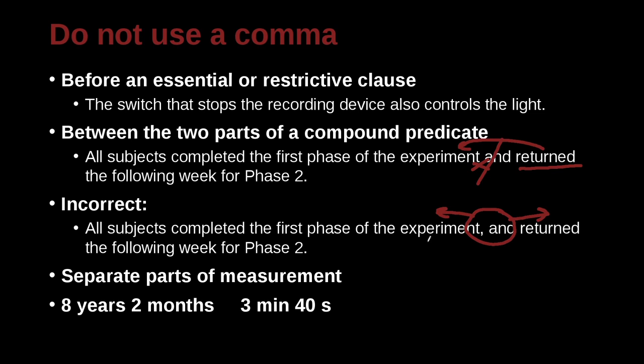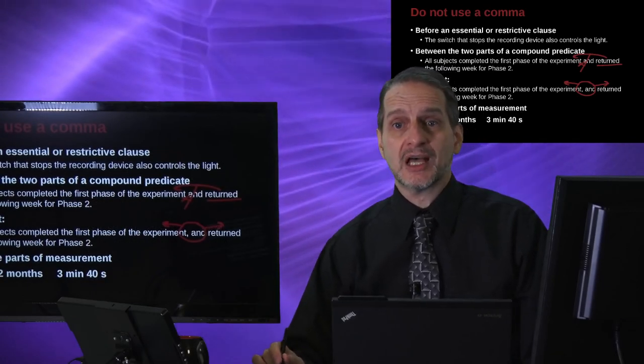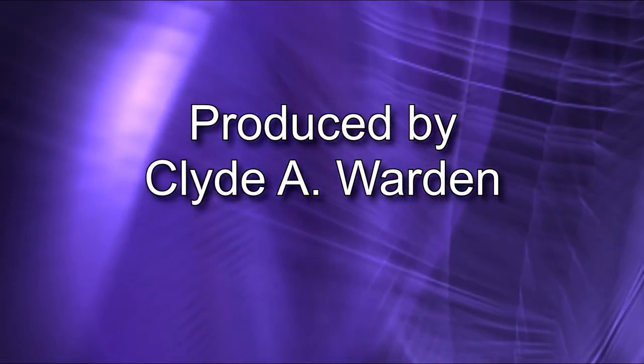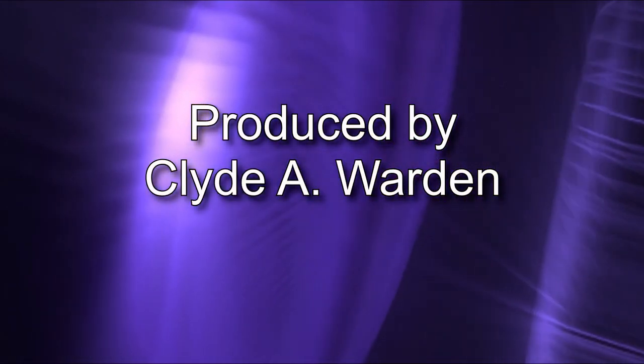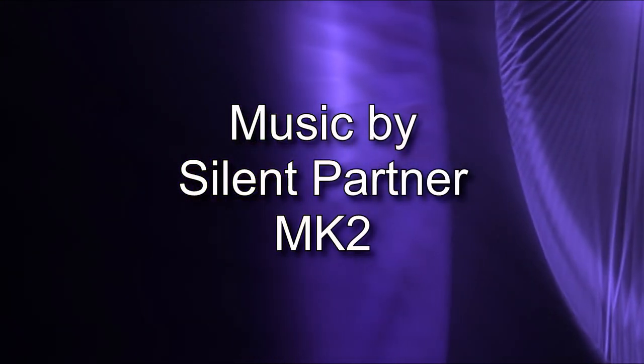Do not use a comma to separate parts of a measurement. For example, if you wrote 'eight years two months' or 'three minutes and forty seconds,' you would not use a comma there — you just leave it as a space.